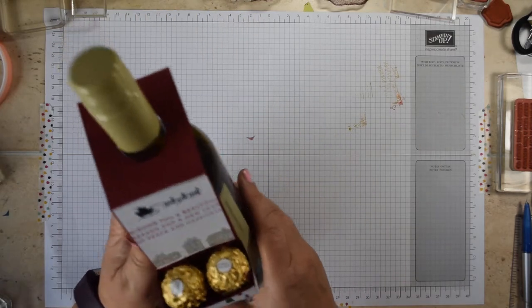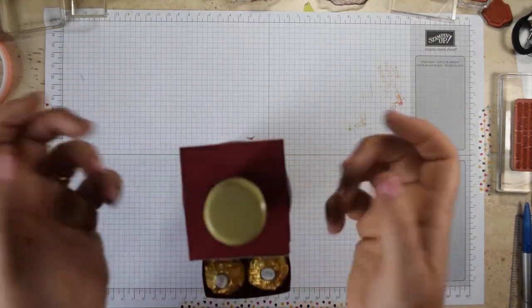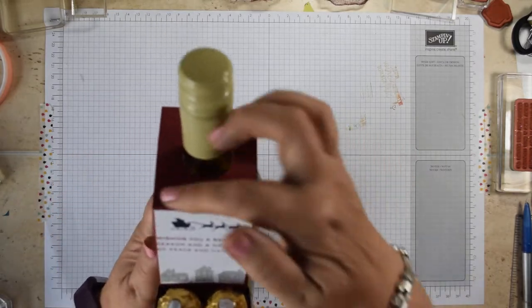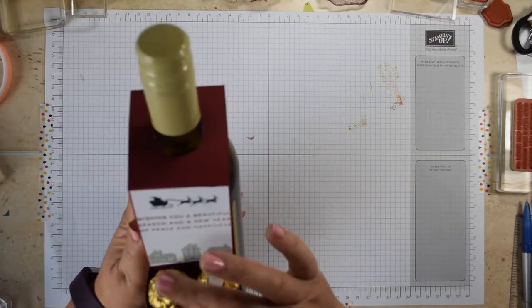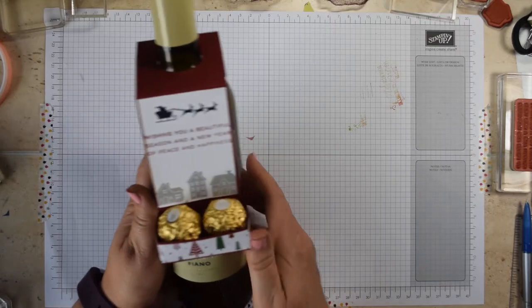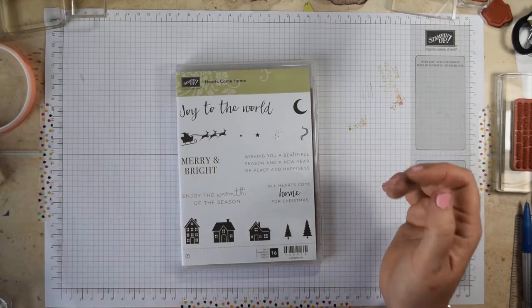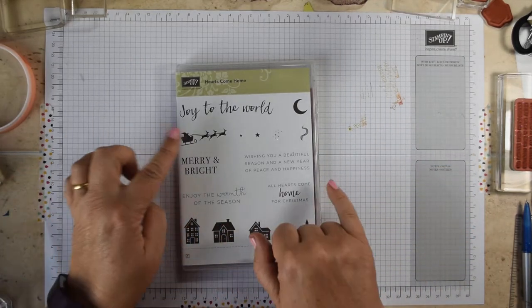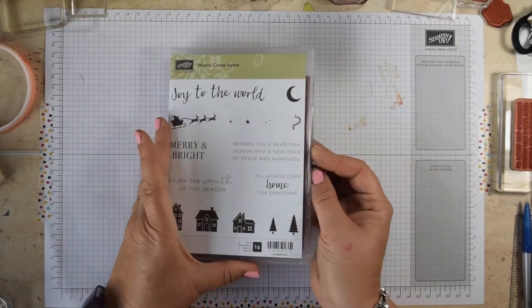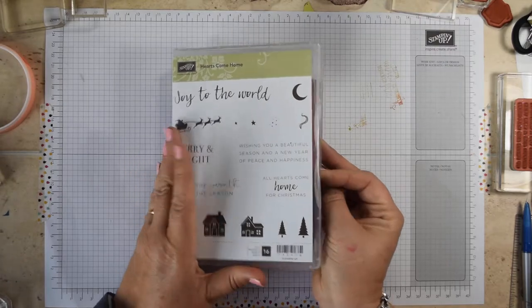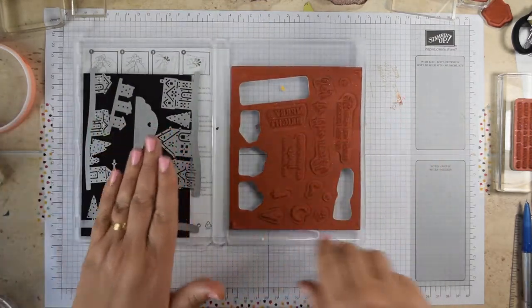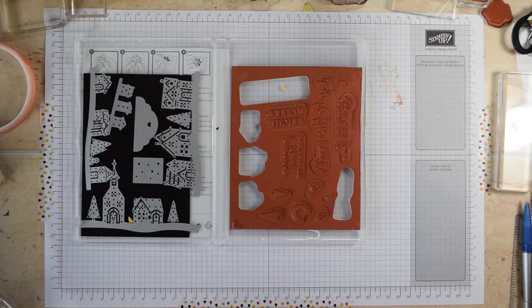So it's a standard 70cl bottle and you can see this sits just on the neck there and holds just two Ferrero Rocher. I'm using the new Hearts Come Home set with these lovely little houses and lots of super sentiments, and it also comes with some coordinating dies as well.